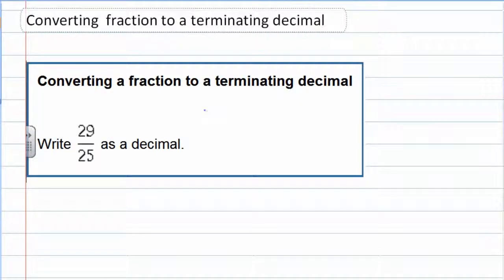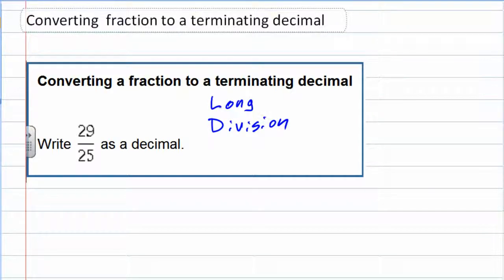Converting a fraction to a terminating decimal. Here we're asked to write 29/25 as a decimal, and we're going to do that with one step — long division. Once we do the long division, that will give us our equivalent decimal.